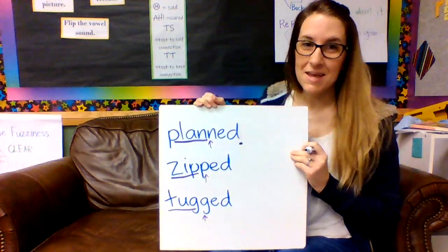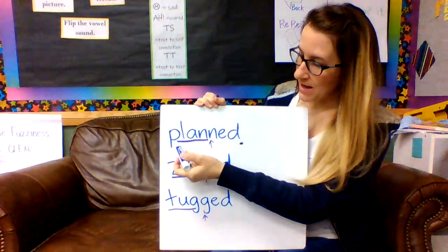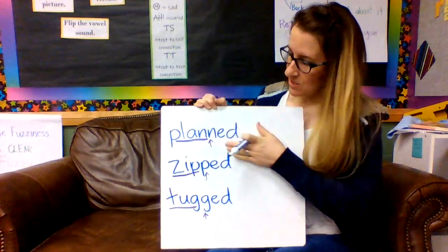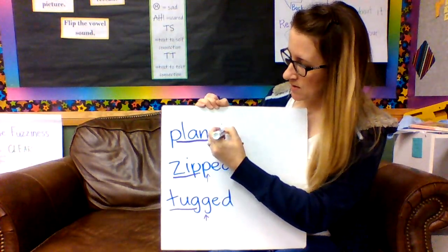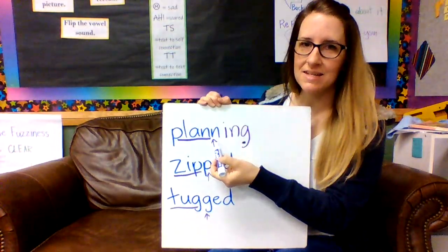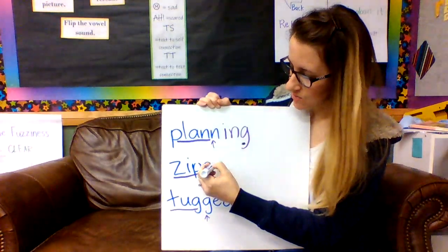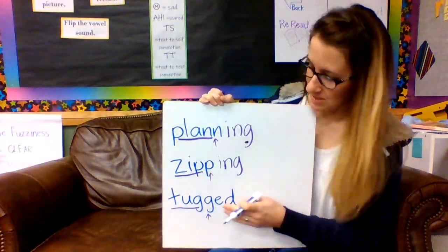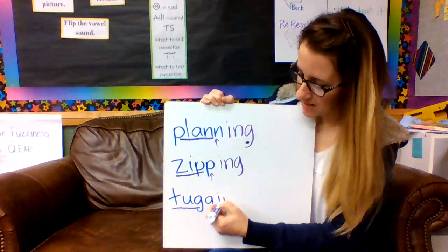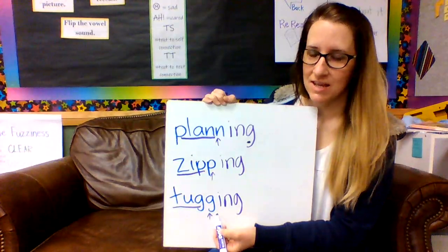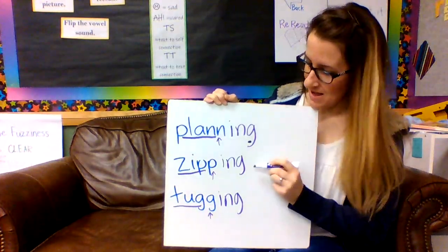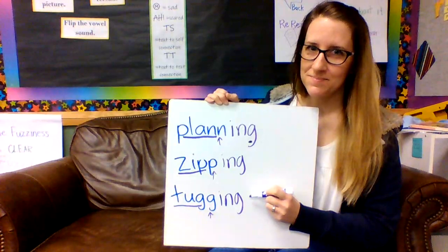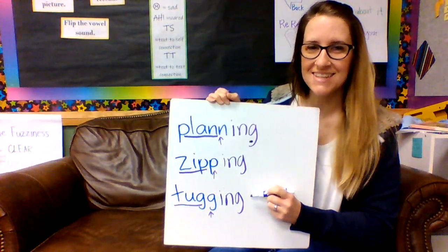This would be the same if we wanted to add -ing instead. My word is planned — 'I planned a party' — but I can very easily change it to planning, and I still need that double N. I can change zipped to zipping, and tugged to tugging, but I still need that double G. I am planning a party. I am zipping my coat. My child is tugging on my arm. Do you see how we need to double up that final consonant?